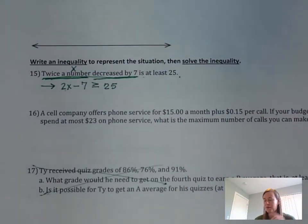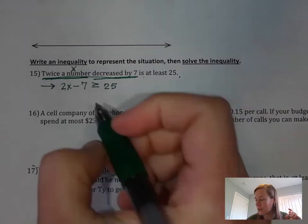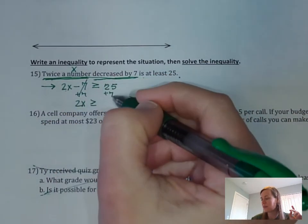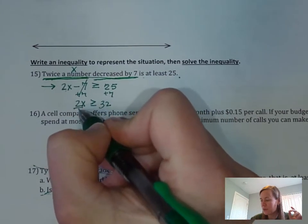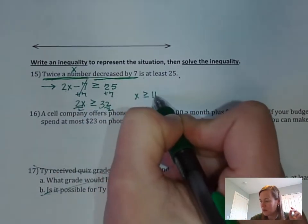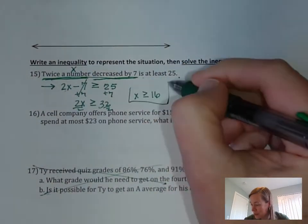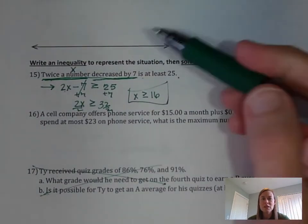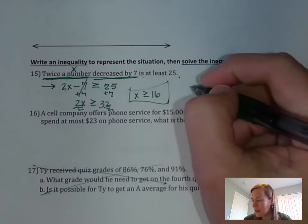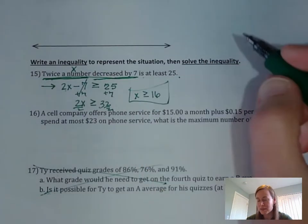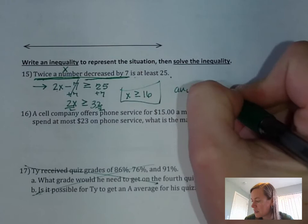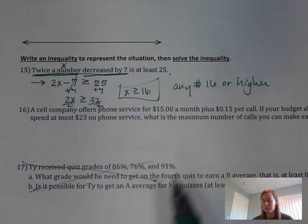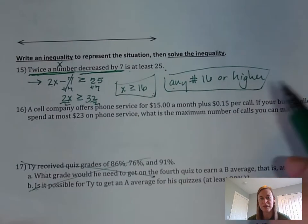So our inequality is 2x minus 7 ≥ 25. Now solve it: add 7 to both sides — that goes to 0 — and we're left with 2x is greater than or equal to 32. Divide both sides by 2: x is greater than or equal to 16. You don't have to graph this one. So twice a number decreased by 7 is at least 25 means any number 16 and up satisfies the word problem.